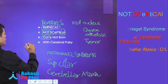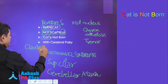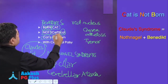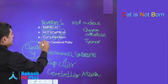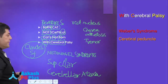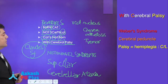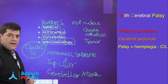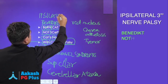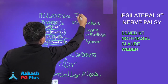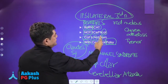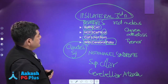This is Claude's syndrome. Claude's syndrome is a combination of Nothnagel and Benedict syndrome, so it has all those features. W is Weber's syndrome — the cerebral peduncle gets affected and there is contralateral hemiplegia. In all these patients there will be an ipsilateral third nerve palsy. These are third nerve palsy syndromes with contralateral features, defined by the structures that get affected.